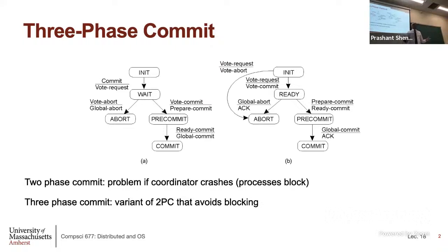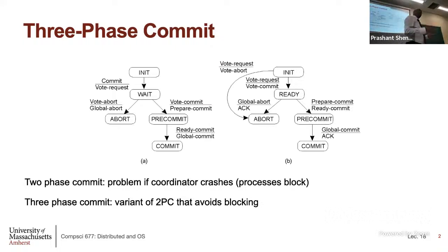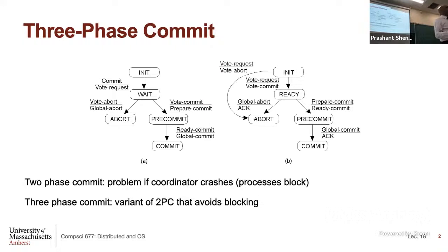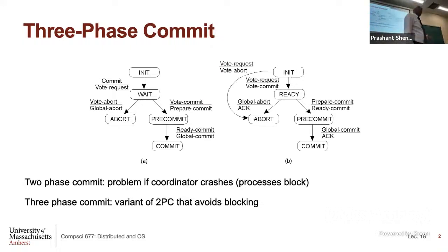In two-phase commit, it is a voting protocol. In the first phase, the coordinator asks everyone to vote whether to commit or abort. If everyone votes to commit, the decision is to commit. If even one node votes to abort, the decision is to abort. The problem with two-phase commit is when the coordinator node crashes. If all the other nodes are sitting in the ready state waiting to hear back, you are deadlocked. In Paxos, which we will look at today, the majority is enough — even if some nodes have disappeared, the rest can make progress.